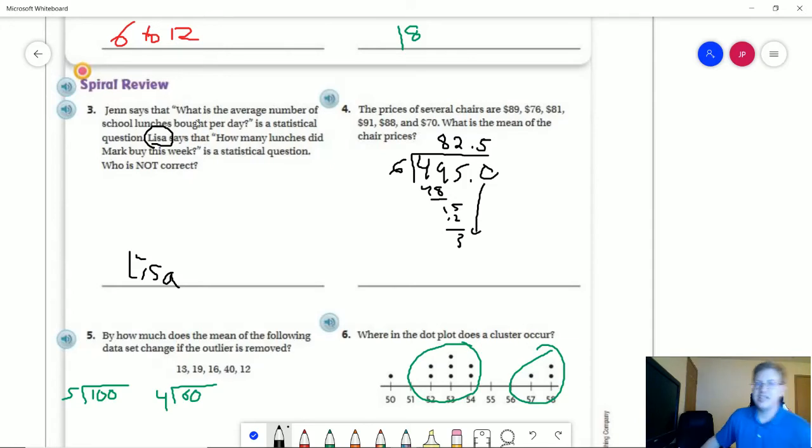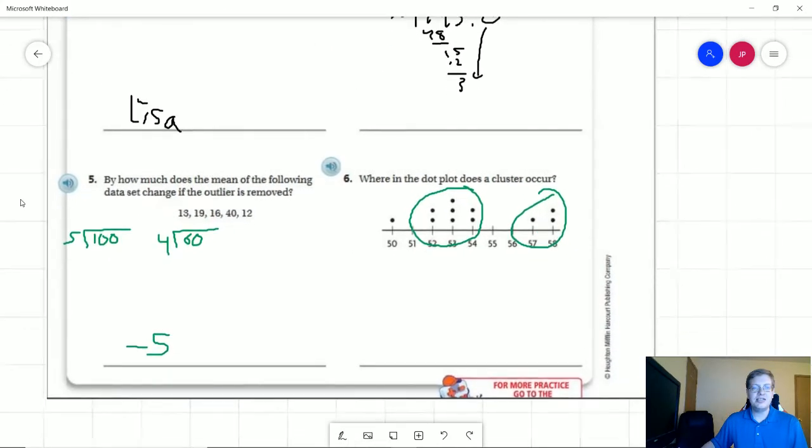Number 4, we can go ahead and add all six numbers up to get a total of 495 divided by 6. So our mean would be 82.5 for that.